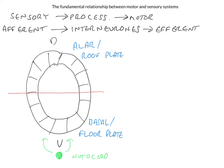The key thing about the alar and basal or the roof and the floor plate is that the floor plate on the ventral side gives rise to motor neurons. And the alar or roof plate on the dorsal side gives rise to sensory neurons, sensory and interneurons.